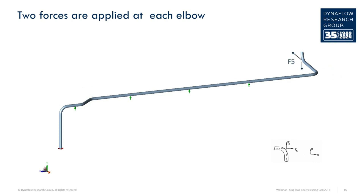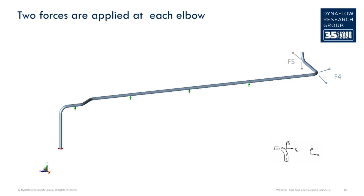These two forces at a single elbow can act at the same moment in time. Thus, a force in two directions is applied at each elbow, or a single resultant force taking both of these forces into account. As said before, the static load is placed at one elbow at a time.